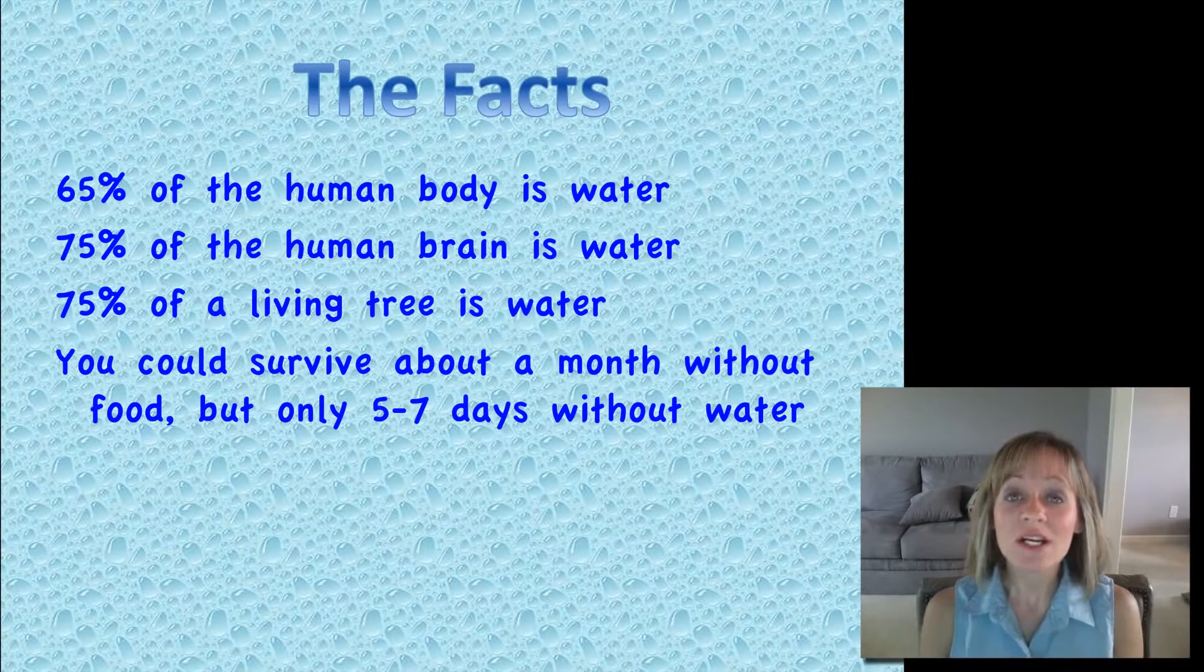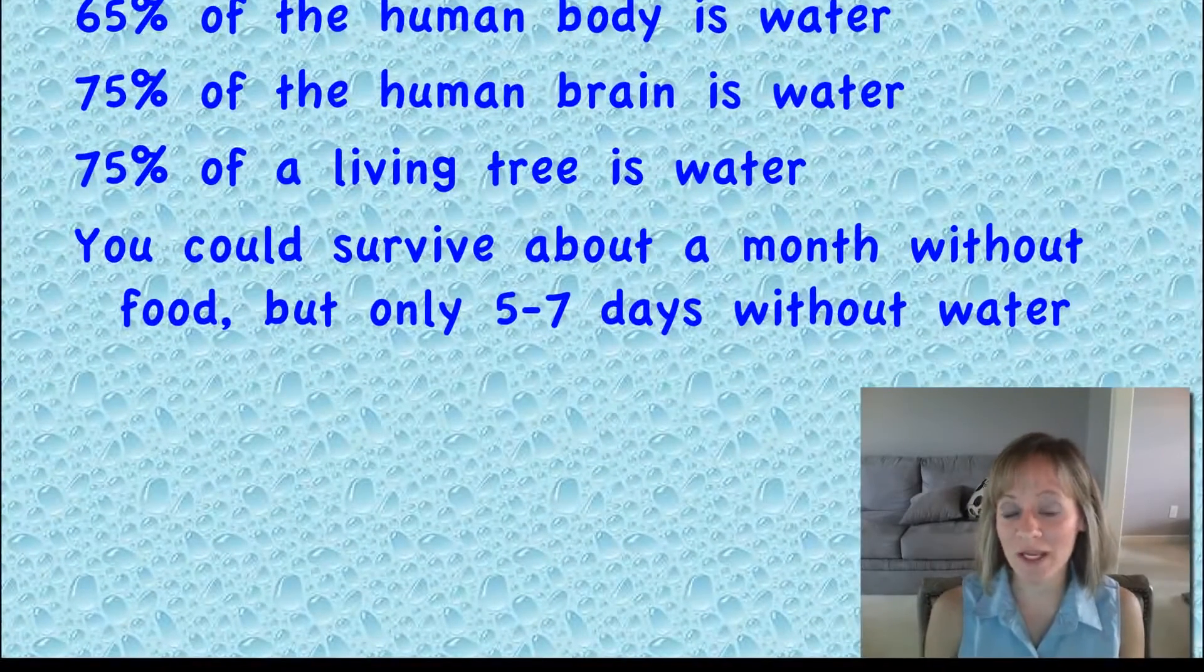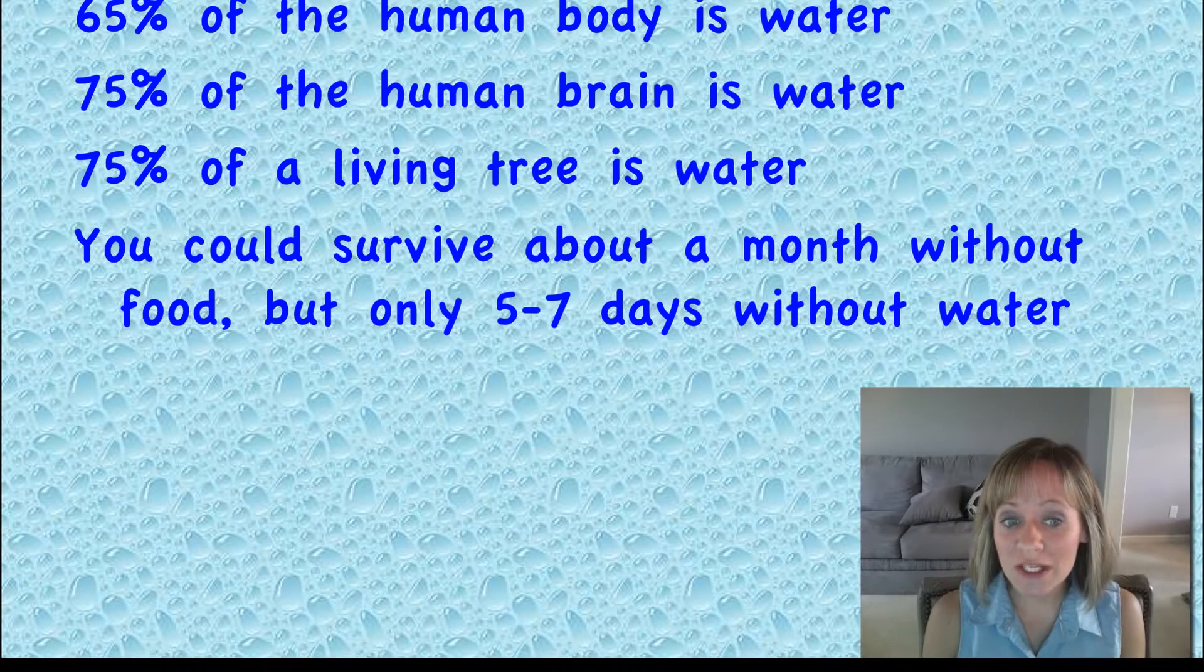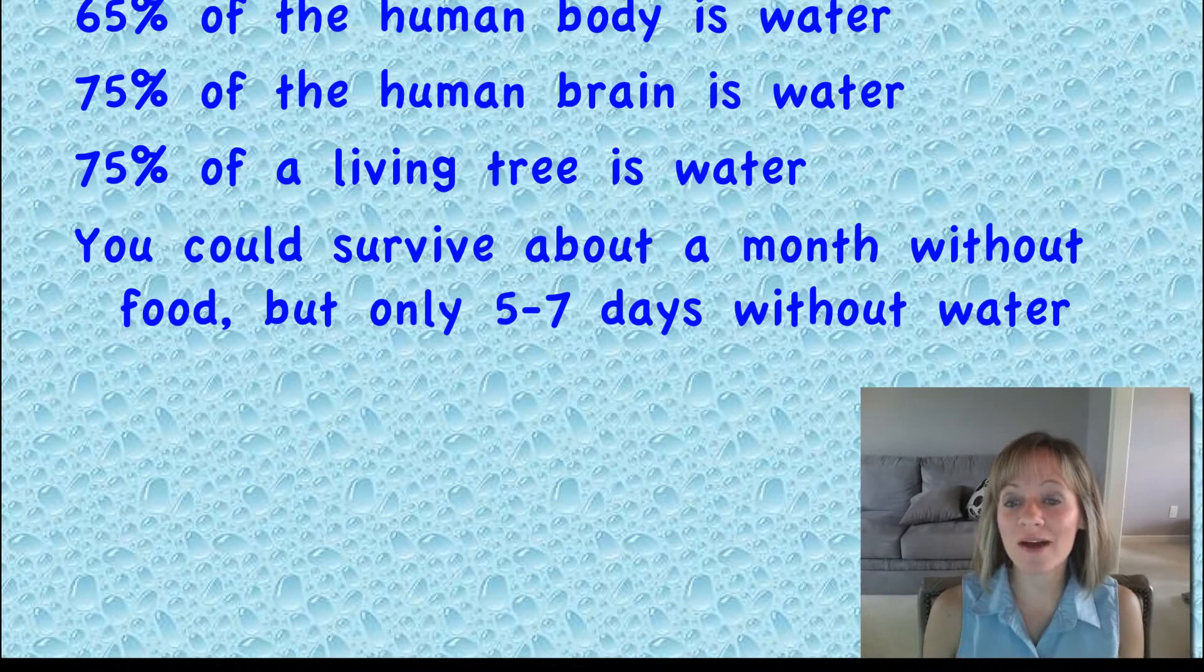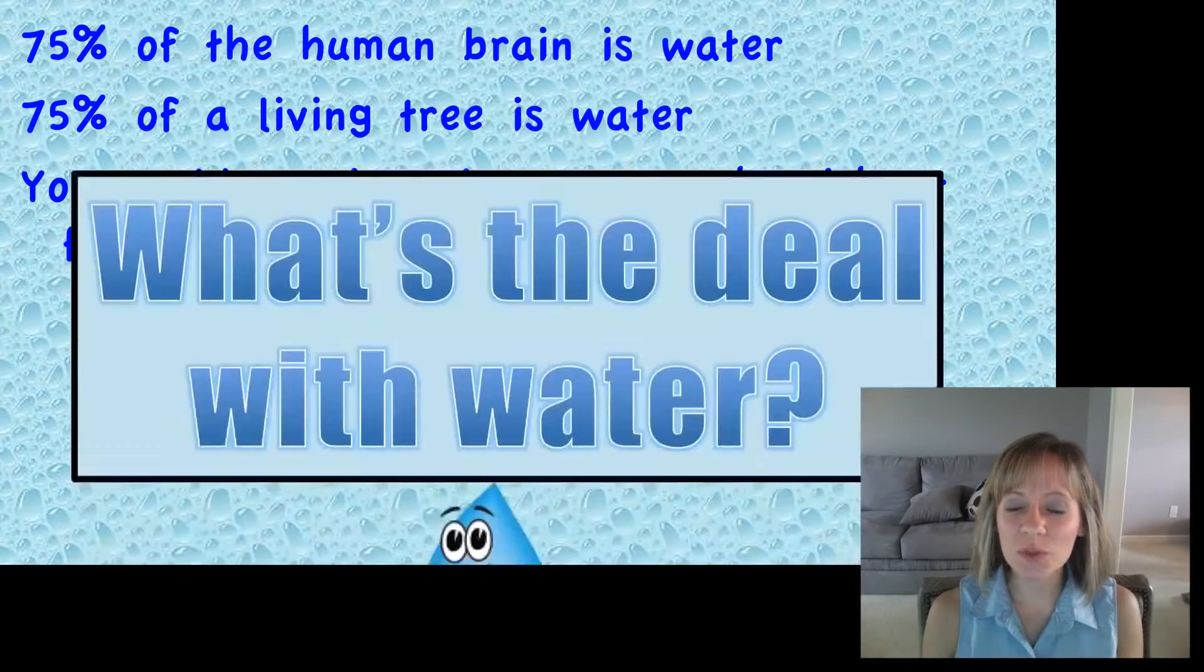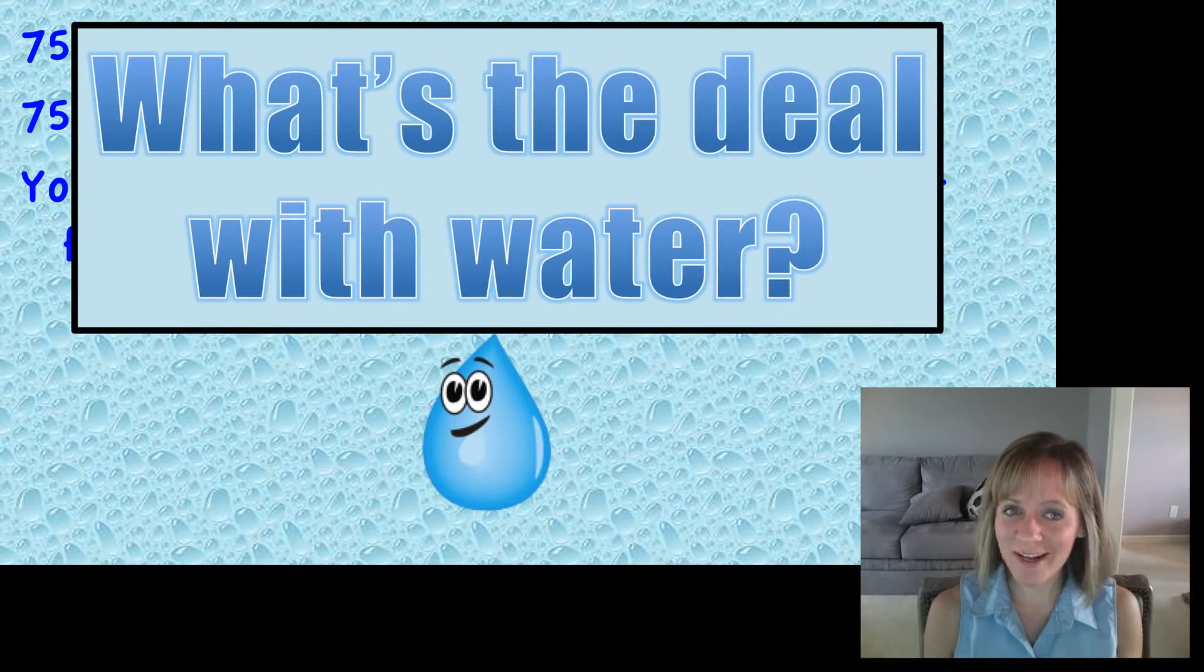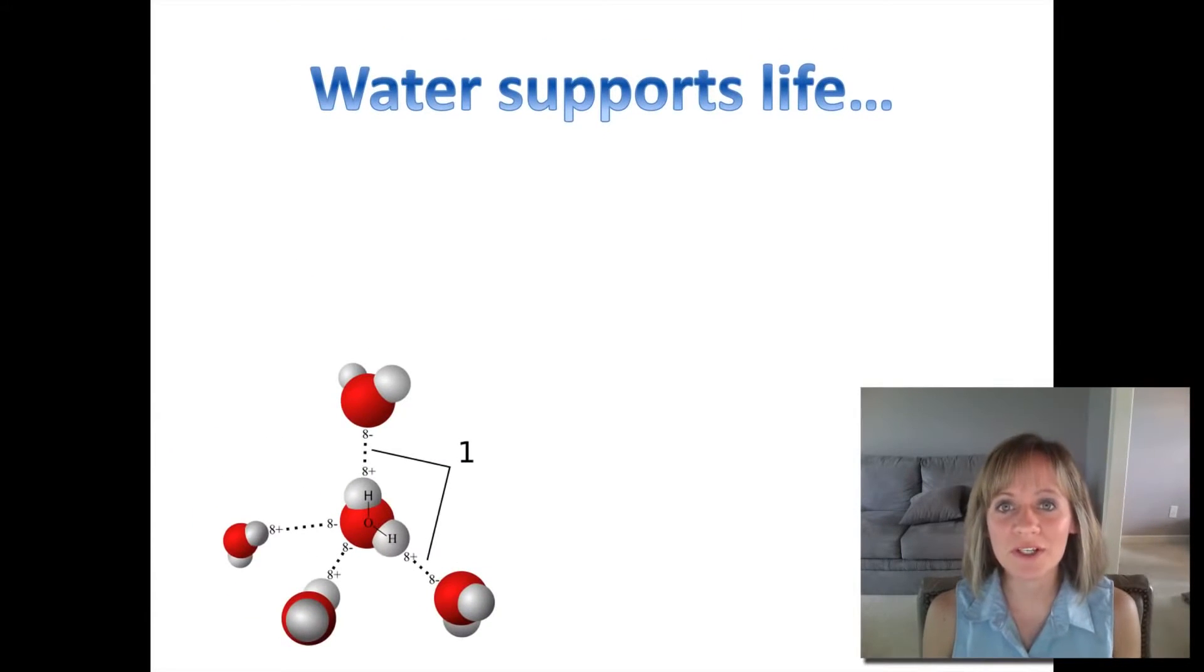Let's have some facts about water: 65% of the human body is water, 75% of the brain is water, 75% of a living tree is water, and you could survive about a month without food but only five to seven days without water. So water is really important. The question we're going to try to answer is what's the deal with water? Water supports life, and in this video we're going to talk about four main reasons or properties of water and how it supports life.